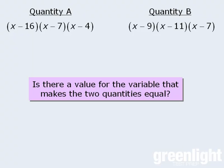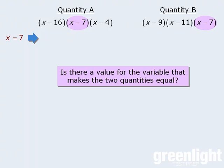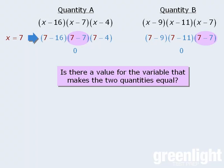Well, notice that both quantities consist of products of binomials, and both of them feature the binomial x minus 7. So if we let x equal 7 and plug 7 into both quantities, something nice happens. Both of these binomials evaluate to be 0, and any product that includes 0 must evaluate to be 0. So great, we've quickly shown that the two quantities can be equal, which means the correct answer here must be either C or D.